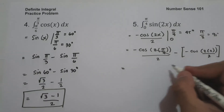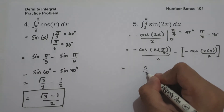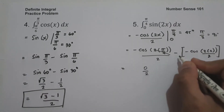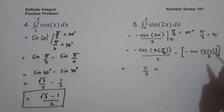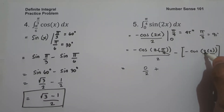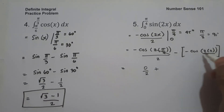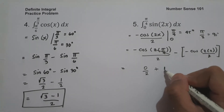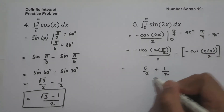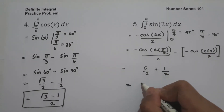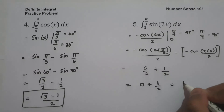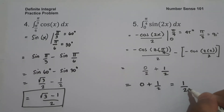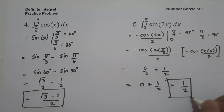So we have 0 over 2. Negative times negative gives positive. Then 2 times 0 is 0, cosine 0 is 1, giving 1 over 2. So the result is 0 plus 1 half, which is positive 1 half. This will be our answer.